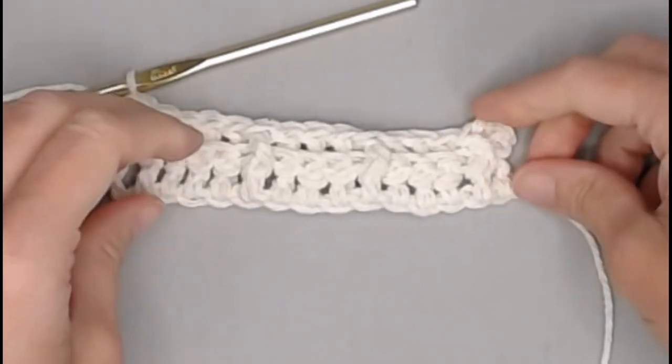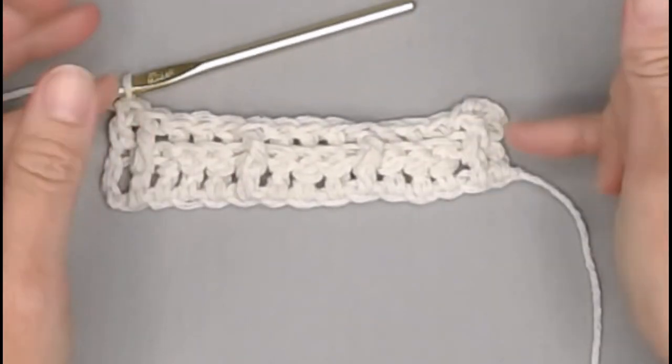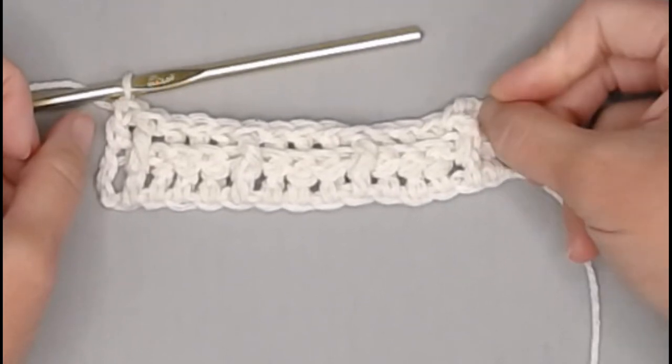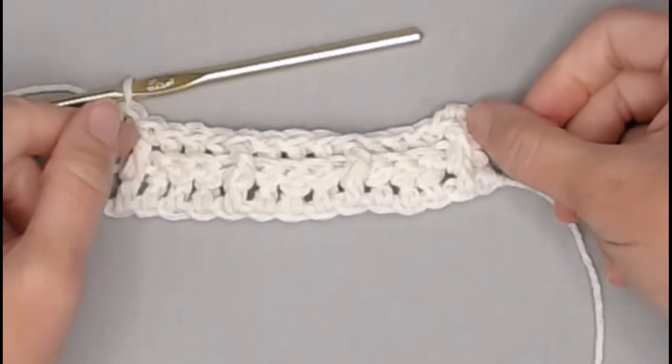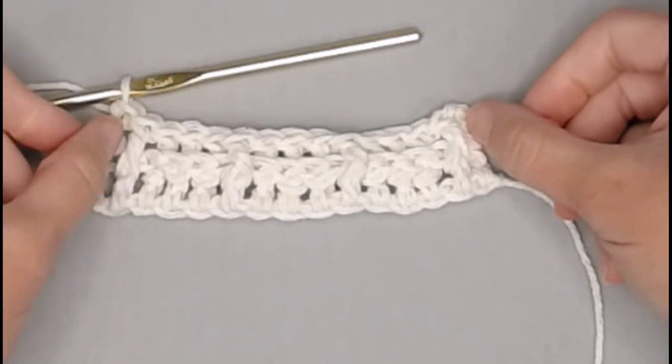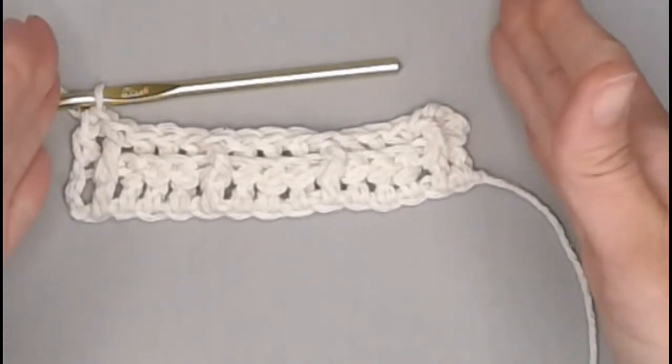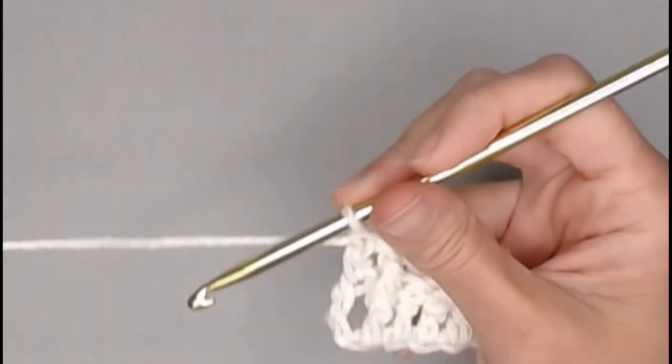You will notice with the waffle stitch that there is kind of a border around it. It'll be double crochet first, then your front post. And at the end, it'll be front post and then a double crochet stitch to kind of frame the waffle stitch. All right, let's move on to row three.